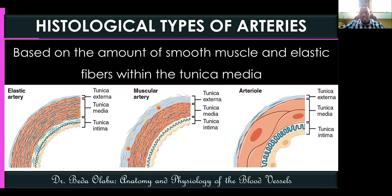Beyond the arteries, arterioles are even smaller blood vessels just before the capillaries. Their wall is predominantly smooth muscle, which is why they determine blood pressure through vasoconstriction and vasodilation.